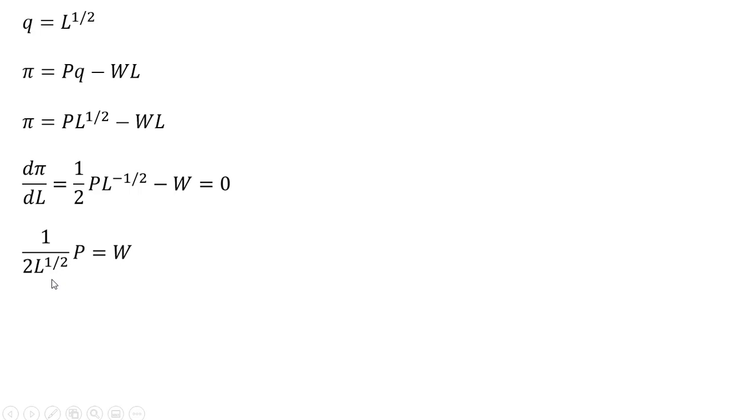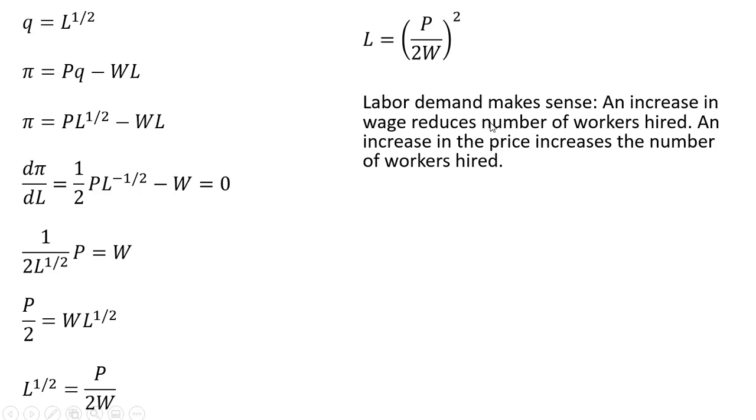So moving this L to the minus 1 half down into the denominator, multiplying through by L to the 1 half power, and then dividing through by W, and finally squaring both sides of the equation.